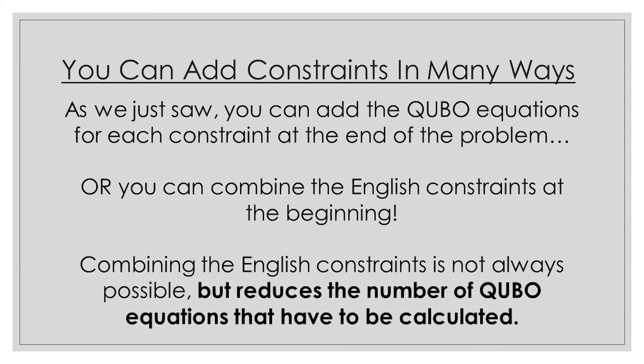Now why did this work? It just goes to show that the English constraint we originally have is the mathematical QUBO equation we end up with — we just do the addition at a different time. Originally, we did our addition at the end when we translated two individual constraints into QUBO equations and then added the numbers, but you can also take the two English constraints, make them one constraint, and find the QUBO for that. It's a very versatile and lenient process, as you can do your calculations at pretty much any part of the process and still end up with something to map onto a QUBO matrix.